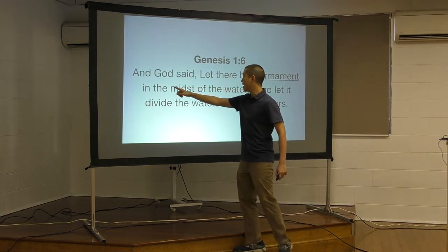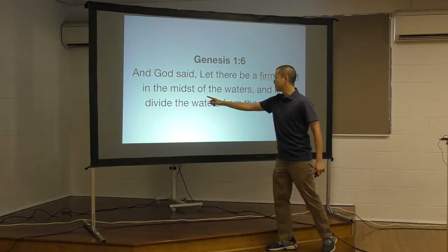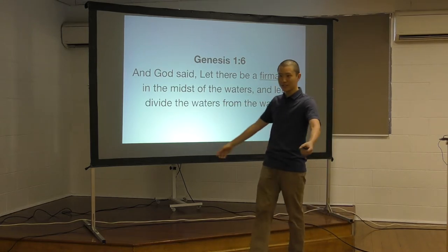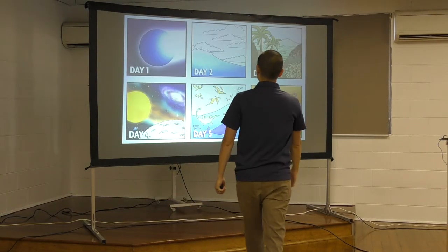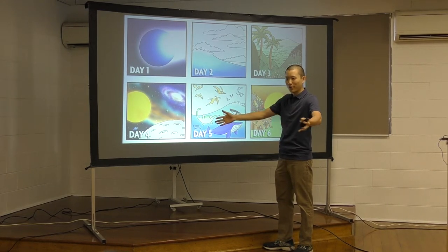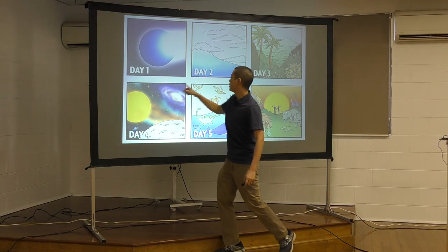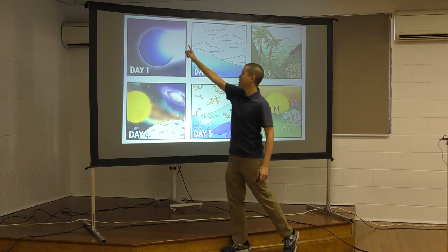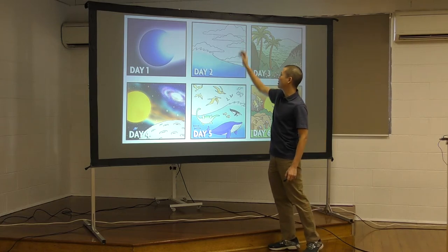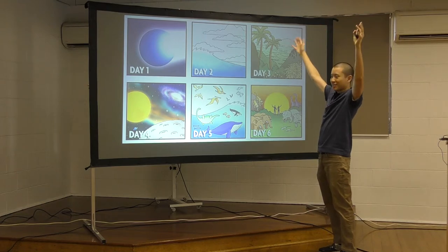Day two. God said, let there be a firmament in the midst of the waters, and let it divide the waters from the waters. So what is the firmament? That's talking about the sky, the space and atmosphere. So on day two, he divided the sea from the land and put the firmament in the sky. He separated the water from the earth and created the firmament, which is the sky and the heavens.